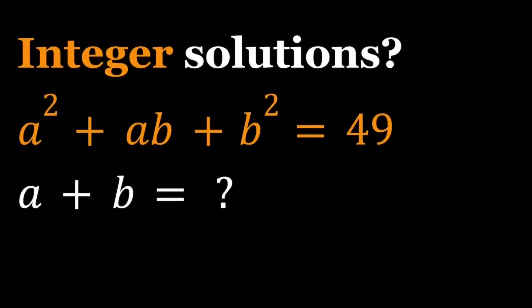Hello everyone. In this video, we're going to be solving an equation with integer solutions. In other words, we're going to be solving a Diophantine equation. We have a squared plus ab plus b squared equals 49, and from this equation we're going to be finding the values of a plus b.